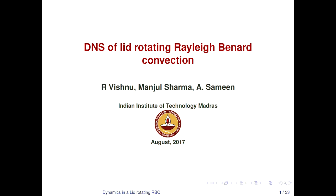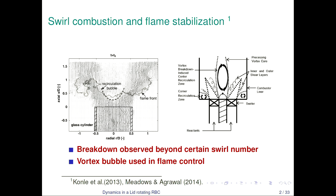The motivation for such a study is coming from technological fields. One such field is combustion, in which there is a premixed swirl combustor which has a swirler that imparts the azimuthal velocity to the air-fuel mixture. Under certain air flow conditions, a vortex breakdown bubble is formed, and such vortex breakdown bubbles are used for aerodynamic stabilization of the flame.